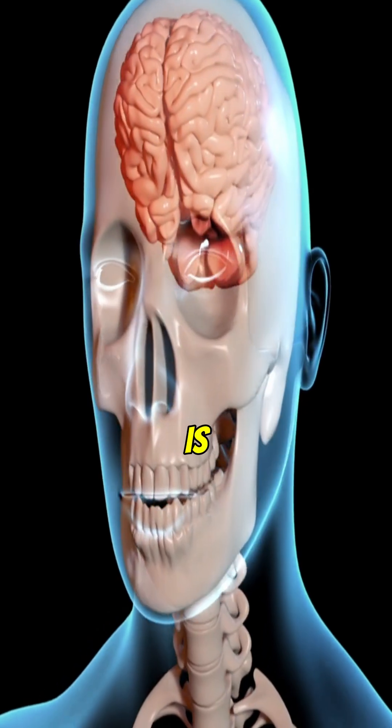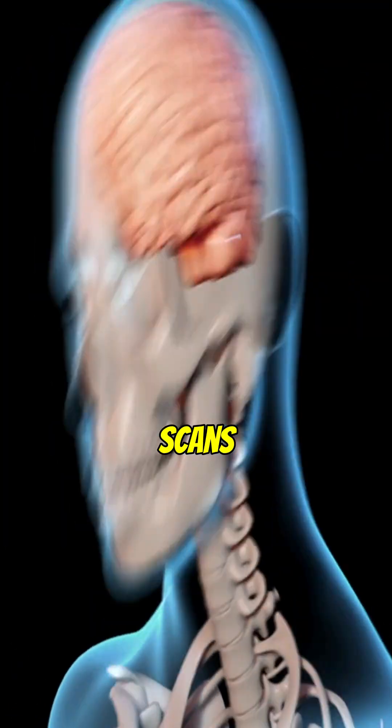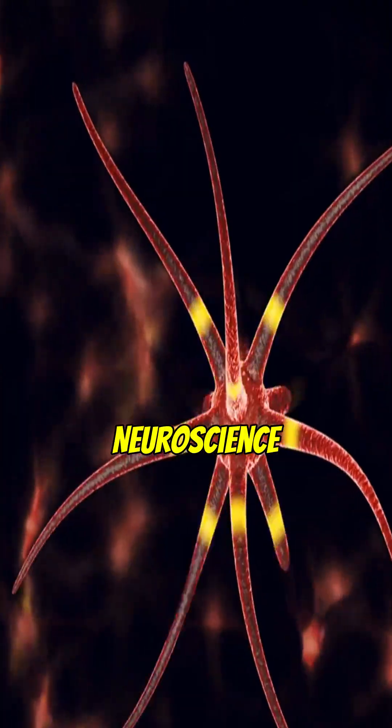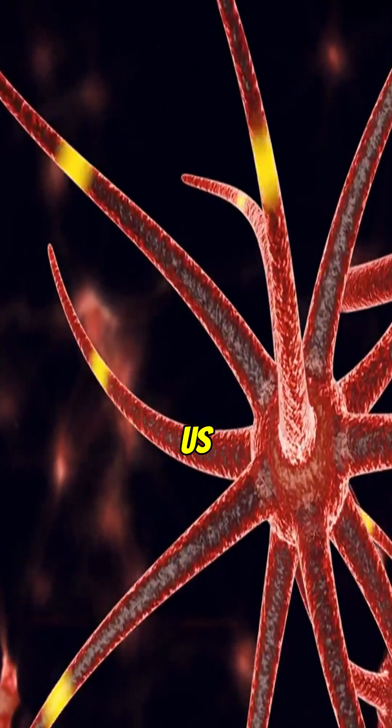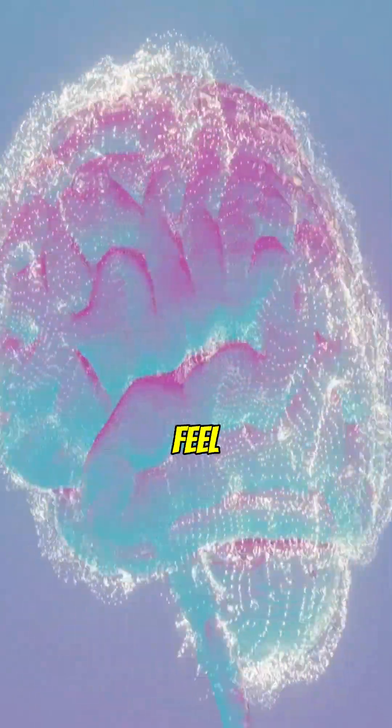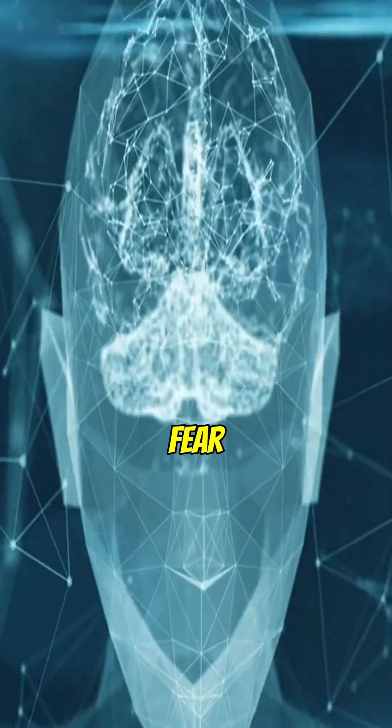Not just theory. This is science grounded in brain scans, chemical analysis, electrical signals, and real-life case studies. Neuroscience psychology is the lens that lets us ask, what's happening inside your head when you feel love, anger, fear, or joy?